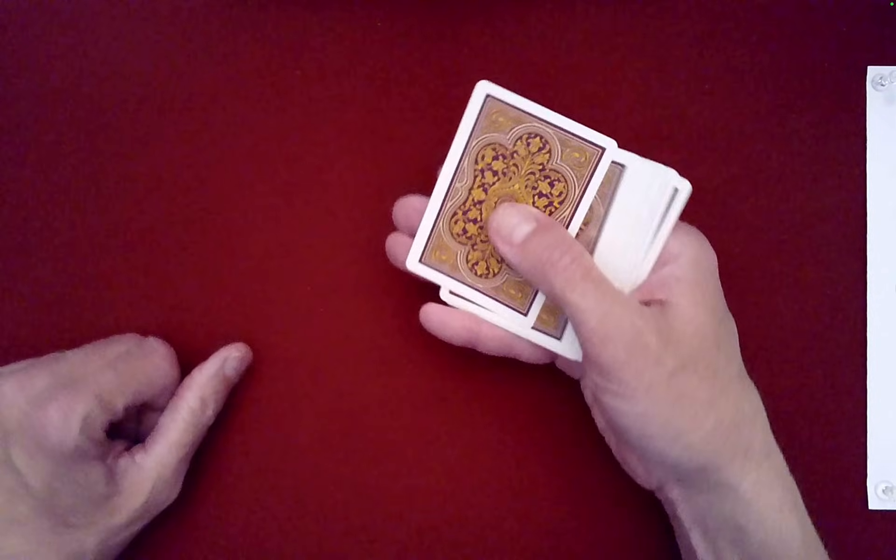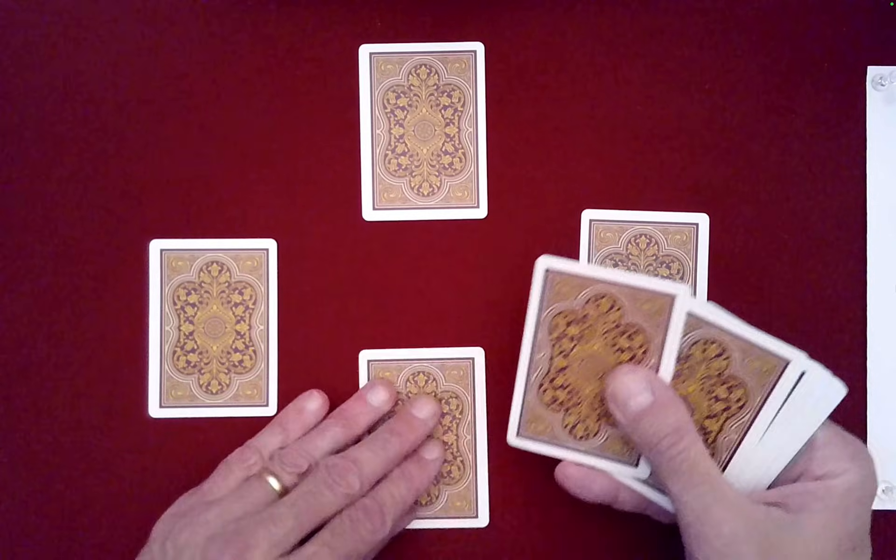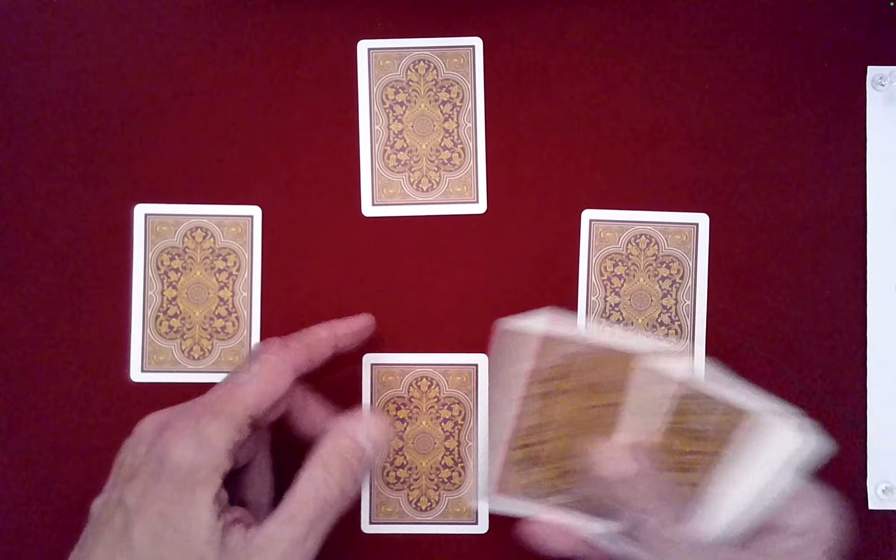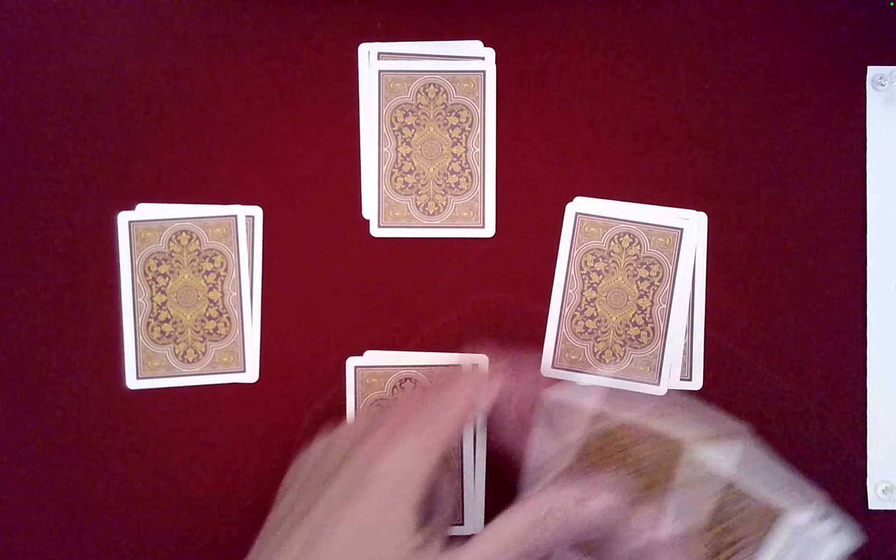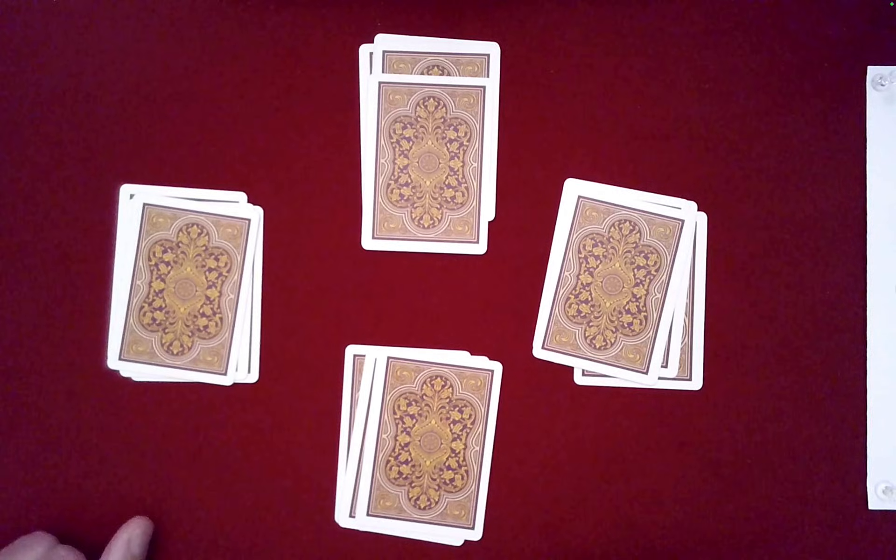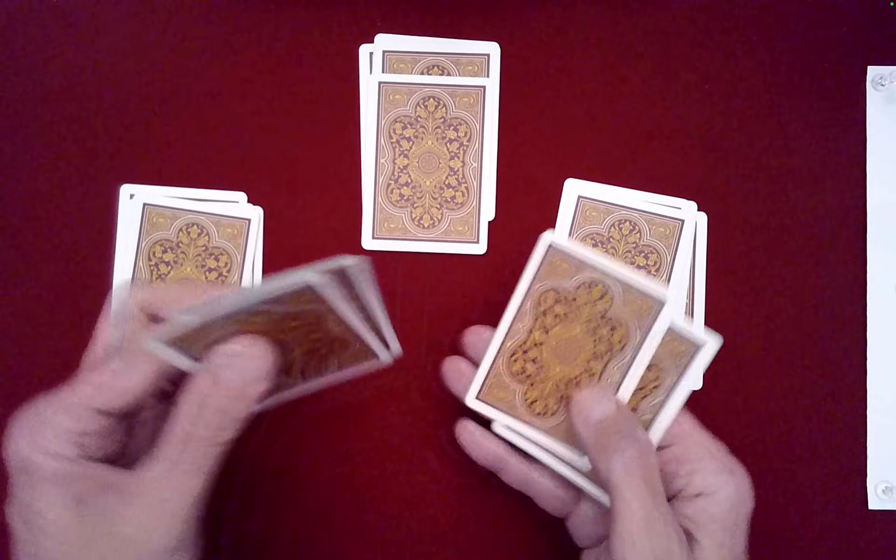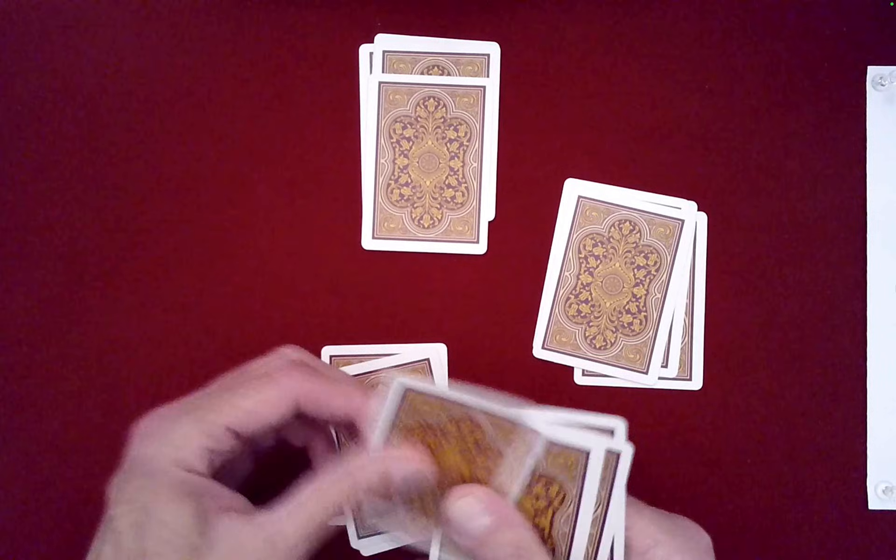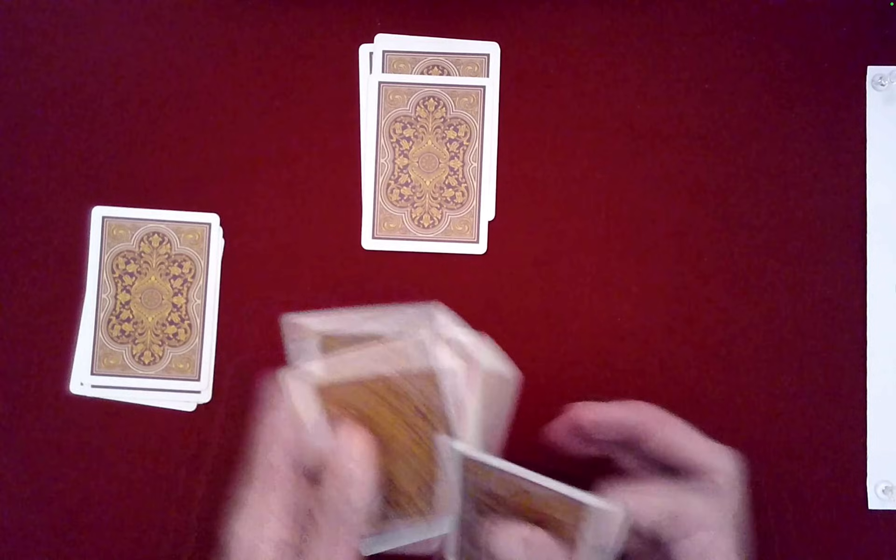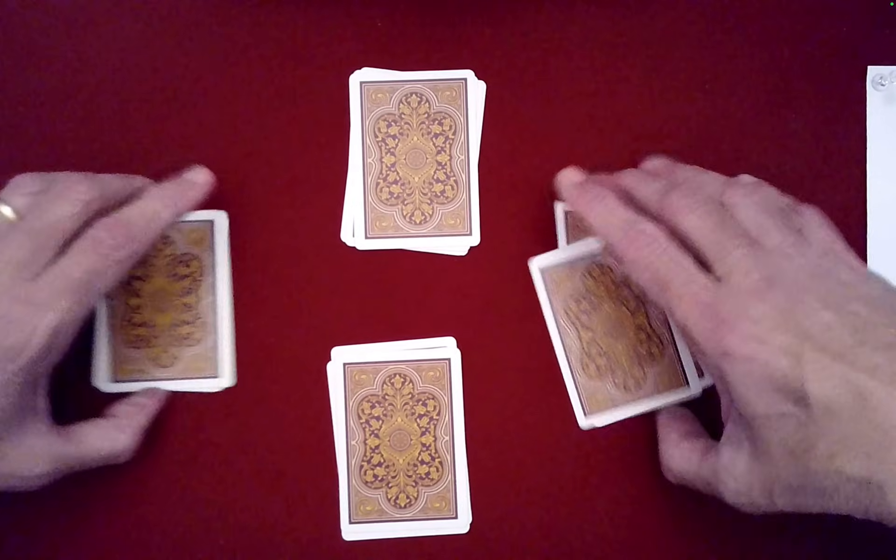Now what I'm going to do is go ahead and deal them out in a different way, which is kind of cool, into like a clock configuration like this. One, two, three, four. And what I thought we would do too here is go ahead and kind of mix each of these a little bit. So what I'm going to do is I'm going to do a monge over-under for each of these just to scramble the cards in each pile.